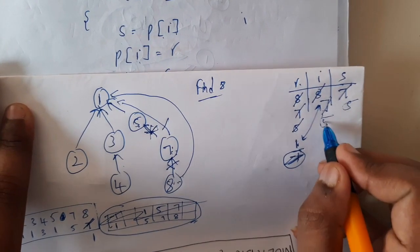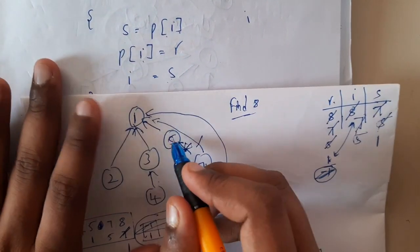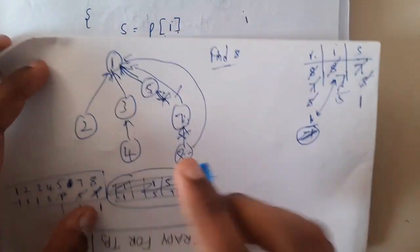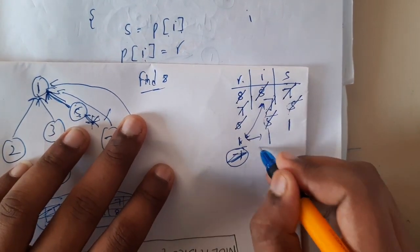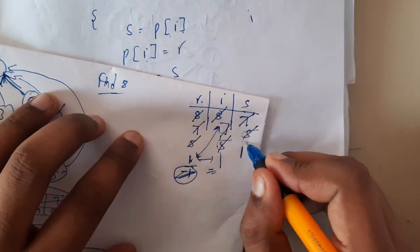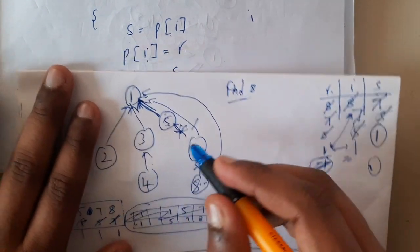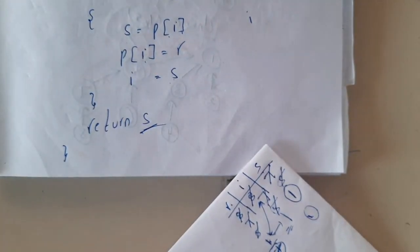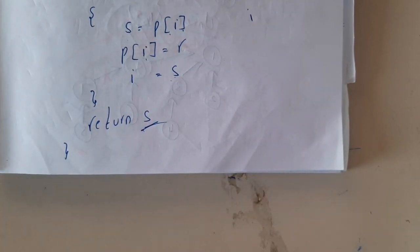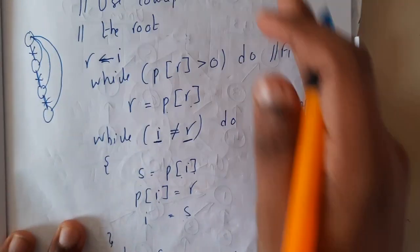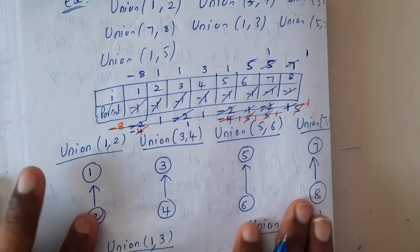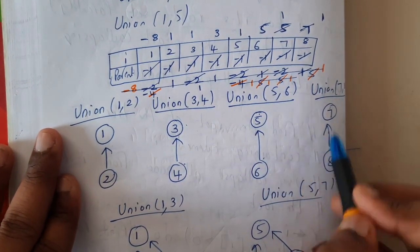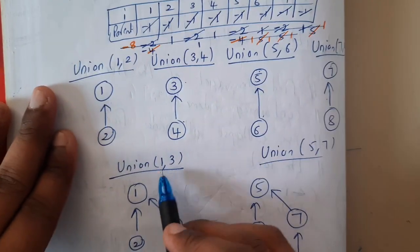Update i to 5. Again these are not equal. s becomes 1 (parent of 5 is already 1), then parent of 5 is set to 1 again, and i is updated to 1. Now i equals r, so we stop and return the value of s, which is 1. The root is 1. Now for nodes 8, 7, and 5 you can reach root 1 directly in a single step.